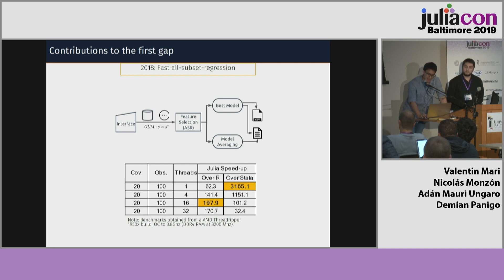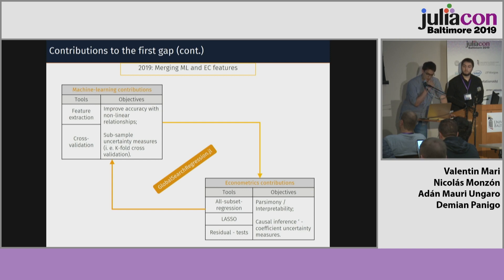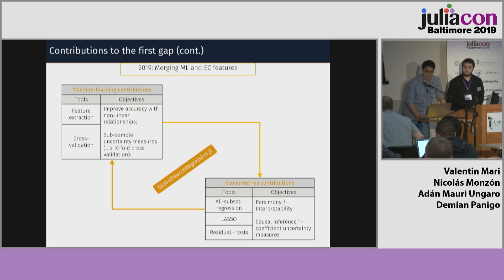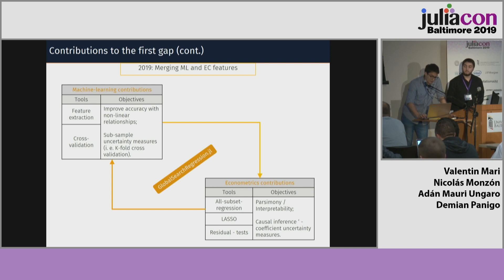However, this is not feasible for fat data. So in order to solve this, we developed a new package building a bridge between econometrics and machine learning, with three main features: first, nonlinear relationships to improve accuracy; second, a regularized lasso regression to allow fat data analysis; and third, cross-validation subsample uncertainty. All of these options preserve econometric features like residual tests for causal inference and also for parsimony.